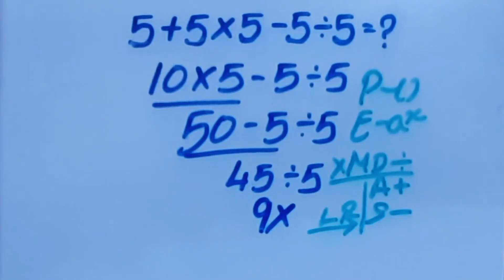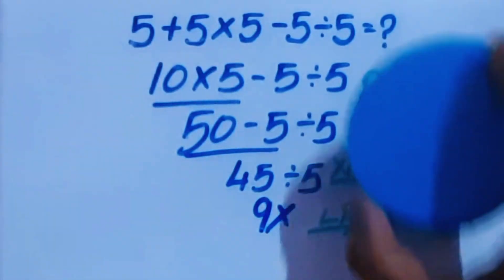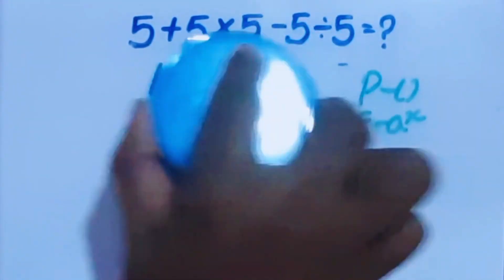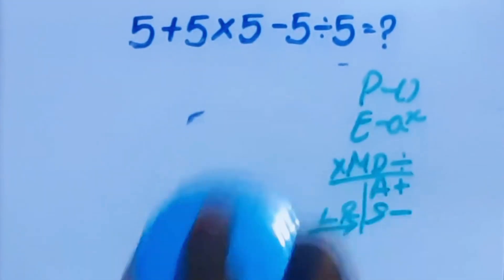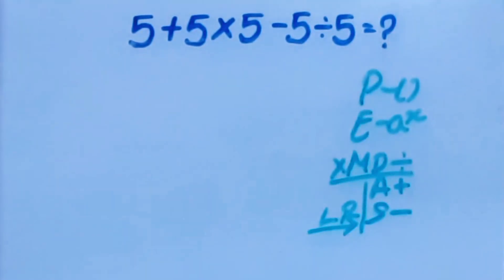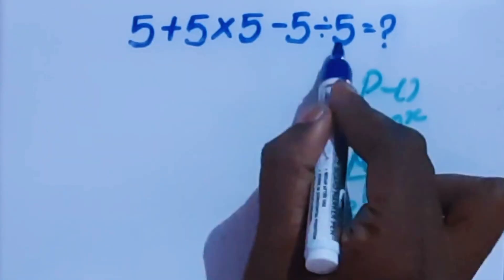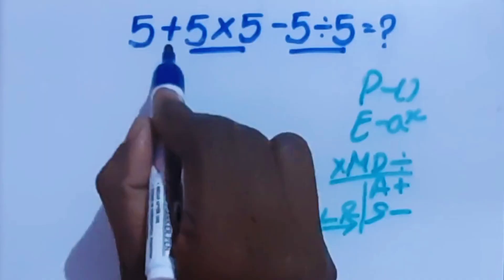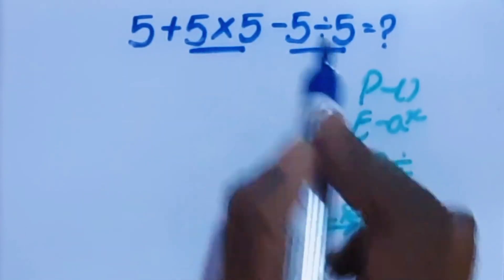Now, we are going to solve this problem the correct way by using order of operations PANDA's. We have addition, multiplication, subtraction, and division. Multiplication and division are higher priority than addition and subtraction.